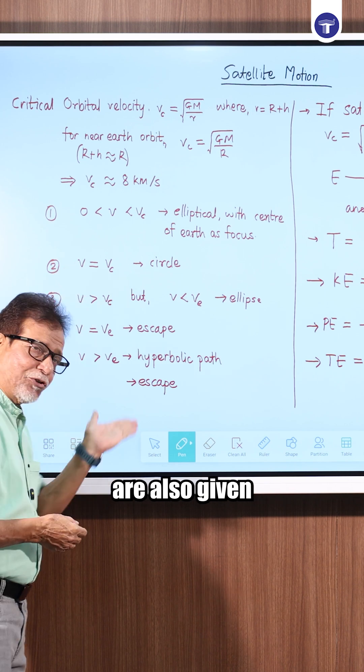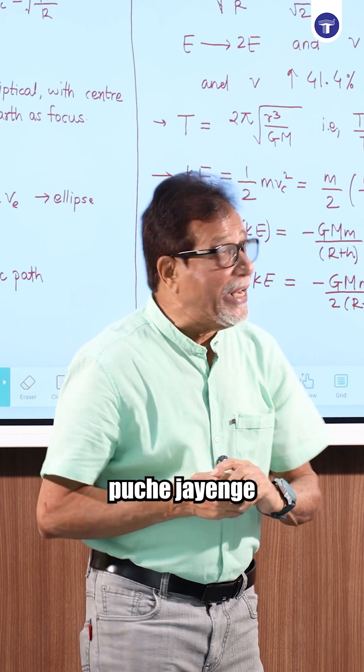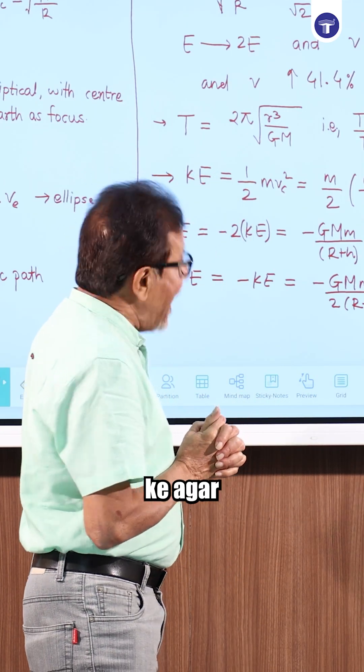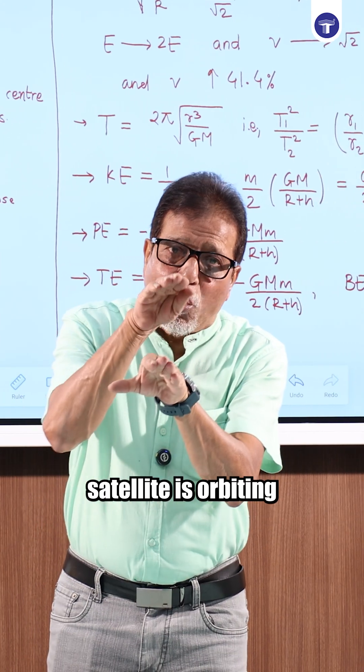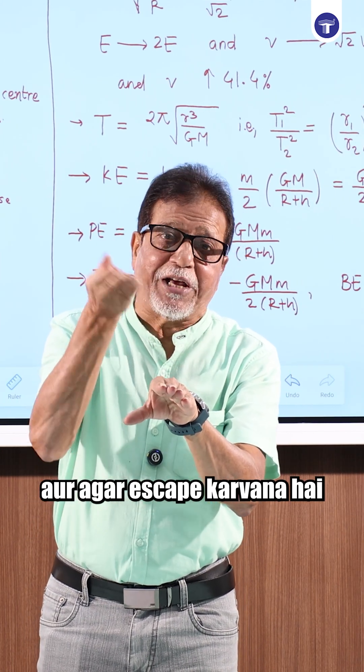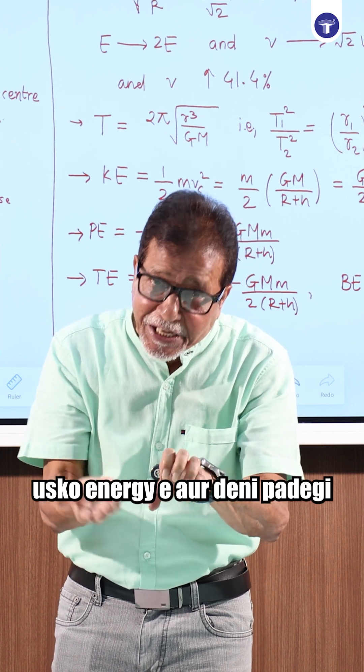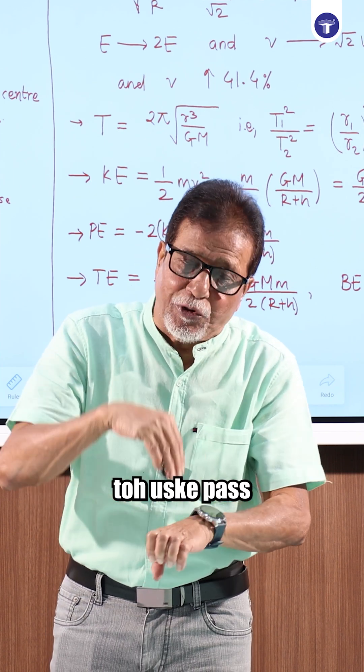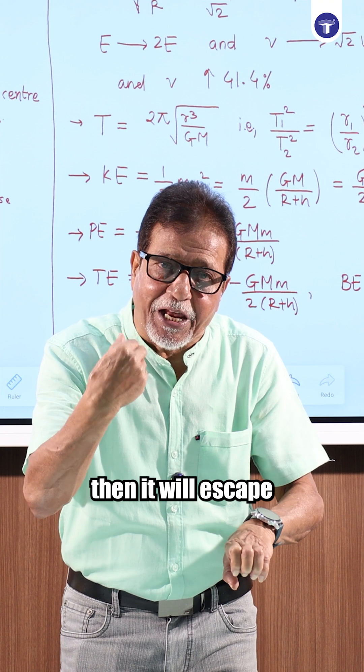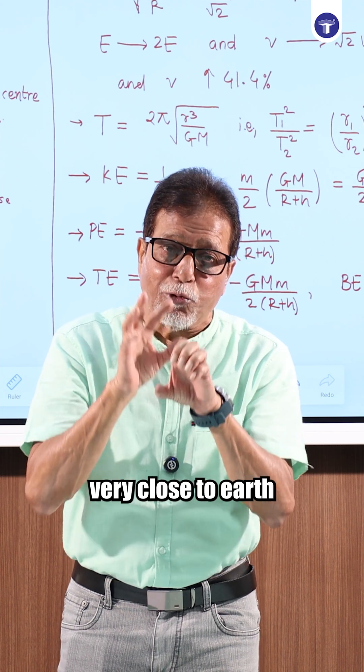And all other conditions are also given. If a satellite is orbiting very close to earth and needs to escape, what do we need to do? There are three conditions. If it has energy E, then we need to give energy E. If it has total energy E, then it will escape, provided it is orbiting very close to earth.